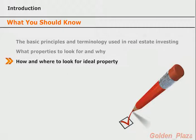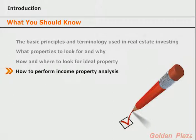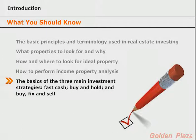You should have a basic understanding of where you want to invest, as well as some ideas for how you're going to find motivated sellers. Another important thing to know is how to do income property analysis. Running numbers on a property is one of the surest ways to know if you can make money on it. You should also know the basics of the three main investment strategies: investing for cash flow, the buy and hold strategy, and the buy, fix, and sell approach. If you need to review any of these items, please go back through the real estate basics course.